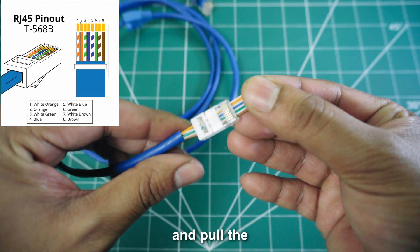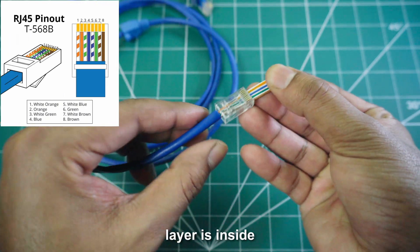Now double-check the wire order and pull the connector until the outer protection layer is inside the connector.